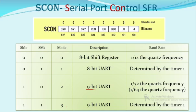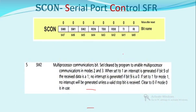Mode 3 is again a 9-bit UART but with a variable baud rate determined by timer 1. Next is SM2, which is called the multiprocessor communication bit. It is set or cleared by the programmer to enable multiprocessor communication in modes 2 and 3.